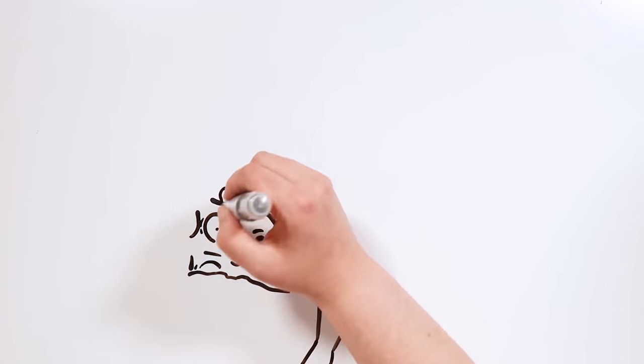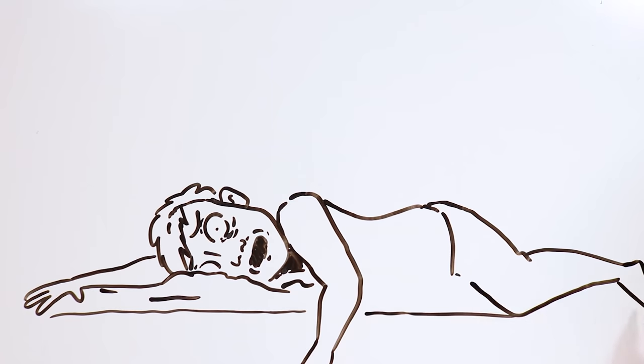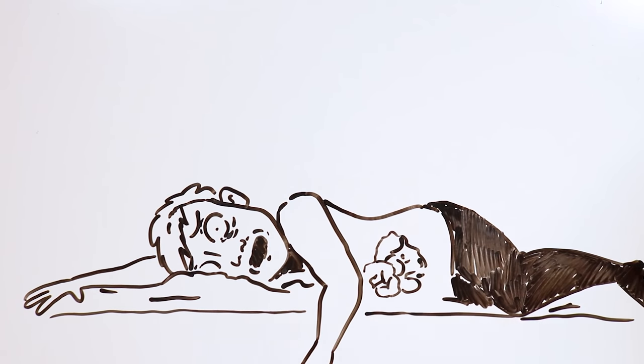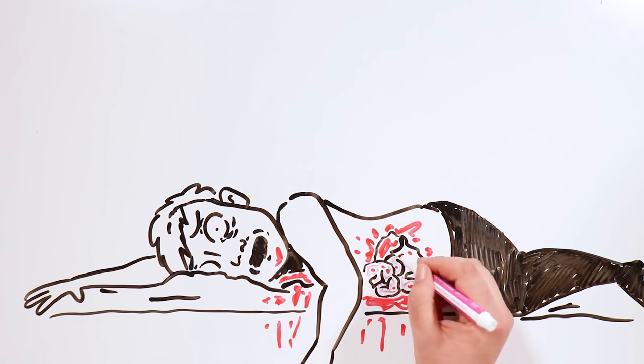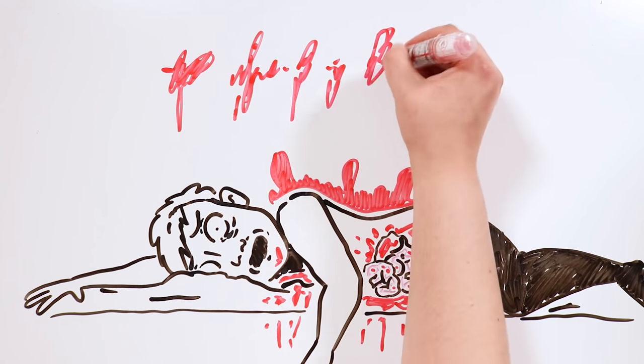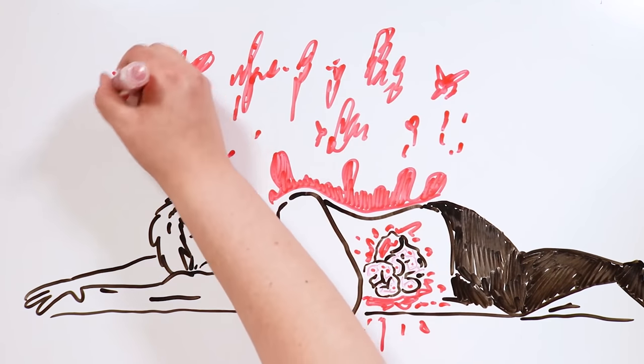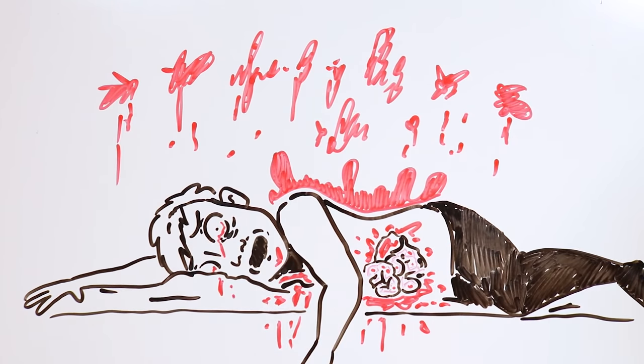Later on, I learned that his wife found his dead body, decapitated and without entrails, on his bed. And on the wall, there was a message painted in blood: I will be the worst nightmare of this entire town... Daffy Duck.